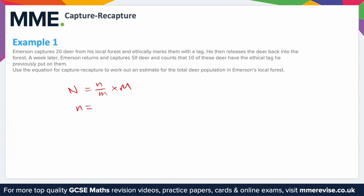So now we can assign some values to each of these. We know that n is 50 — that comes from the fact that he captures 50 deer. Lowercase m is 10, because 10 of these have the ethical tag after the second capturing of the animals. And uppercase M is 20, because that's how many he marked in the first place. Substituting these into the equation, we get 50 over 10 times 20.